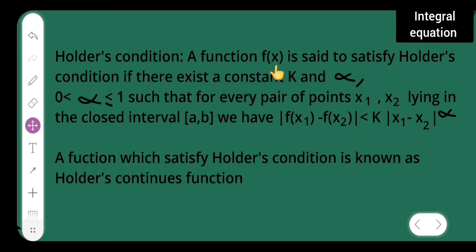Holder's condition: A function f(x) is said to satisfy Holder's condition if there exists a constant k and alpha where 0 < alpha ≤ 1, that means alpha lies between 0 and 1 such that for every pair of points x₁, x₂ lying in the closed interval [a,b], we have |f(x₁) - f(x₂)| < k|x₁ - x₂|^alpha where k and alpha are constants.